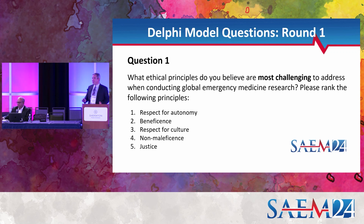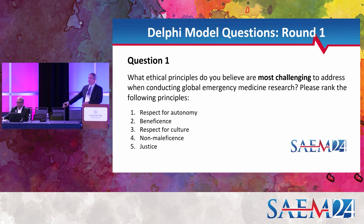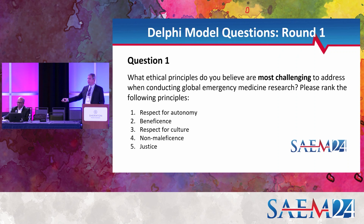That makes a lot of sense — thank you, that's really good. It is a challenging question, because as you say, these are all important concepts, none of this is unimportant. But what we were interested in is learning the differences between an American investigator doing research in a different country versus a local investigator doing the same research. How would the ranking or perception of which ethical principles are most difficult differ between someone from another country doing research versus someone locally? That's an interesting question we're hoping to get some information on with a diverse group.